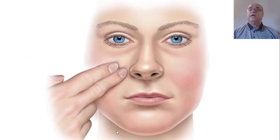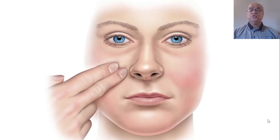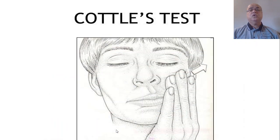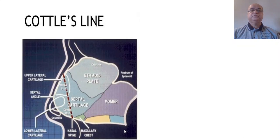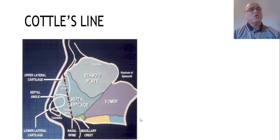Cottle's test, or Cottle's maneuver, is a very simple test. Just ask the patient to withdraw the cheek gently with one or two fingers laterally. This test is used to determine if the most significant site of nasal obstruction is at the valve or further inside the nasal cavity. On the side of obstruction, if the patient says the obstruction is relieved or improved when the cheek is withdrawn, it means the obstruction is at the level of the nasal valve, usually due to a deflected nasal septum.